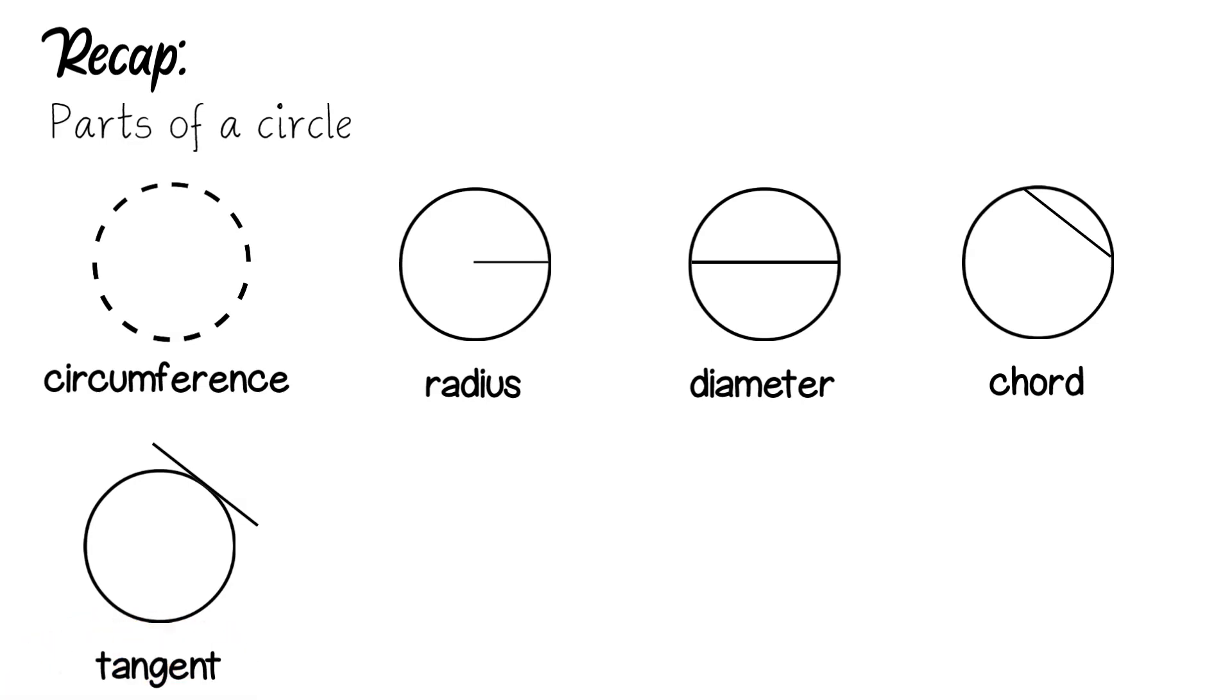The next diagram is an arc. The arc is shown in red and that's part of the circumference.